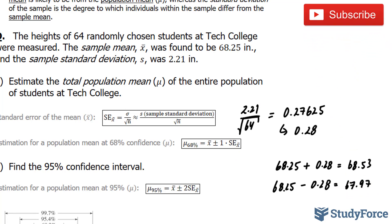In other words, the true mean has a 68% chance of falling within the intervals 67.97 and 68.53. And that is, of course, with 68% confidence.